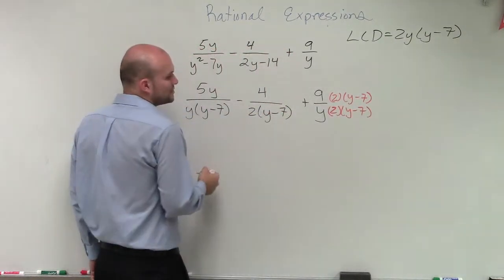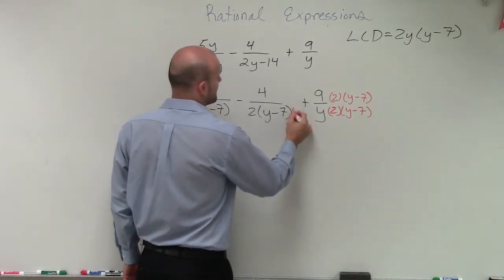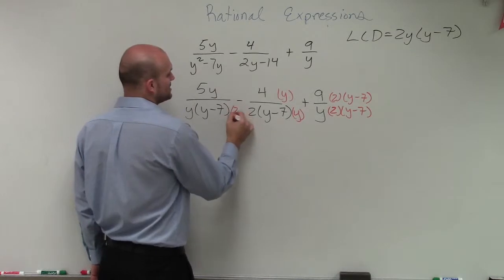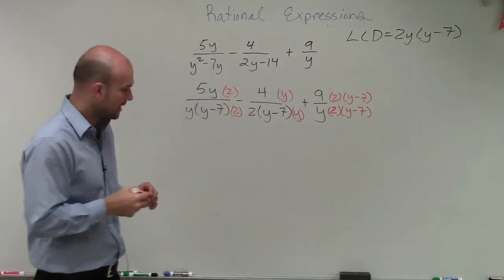Over here, I already have 2 times y minus 7, so I just need to multiply by a y on the top and the bottom. Over here, I already have a y, so I just need to multiply by the 2.